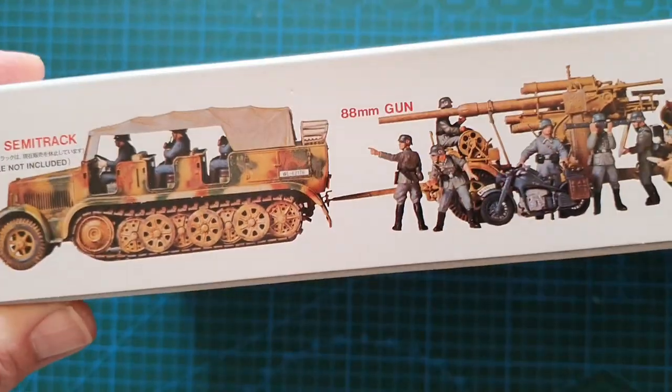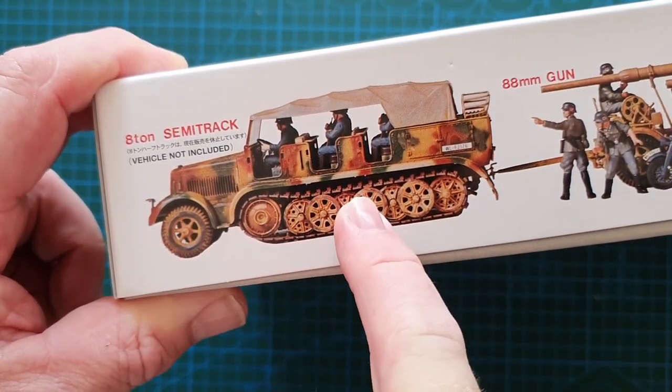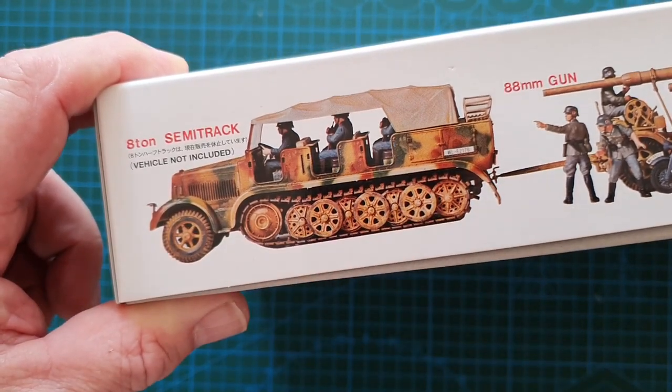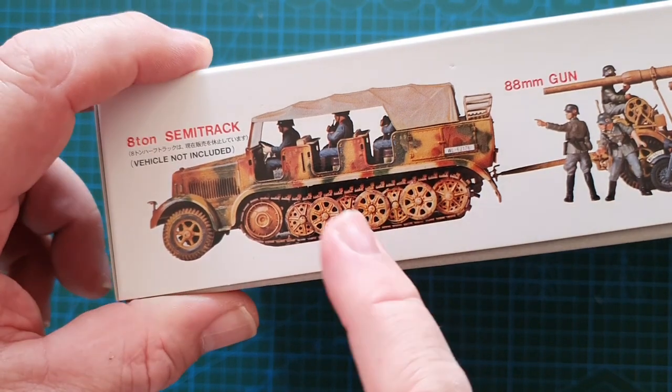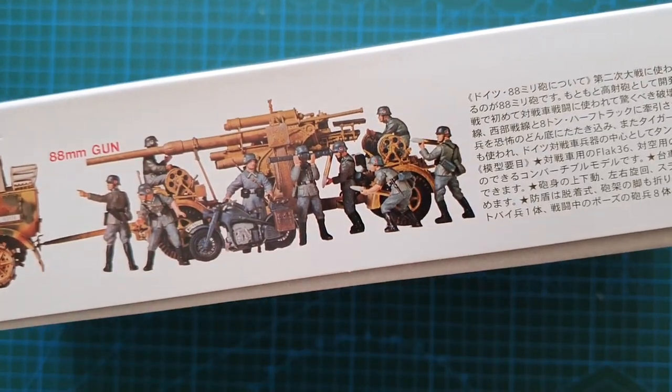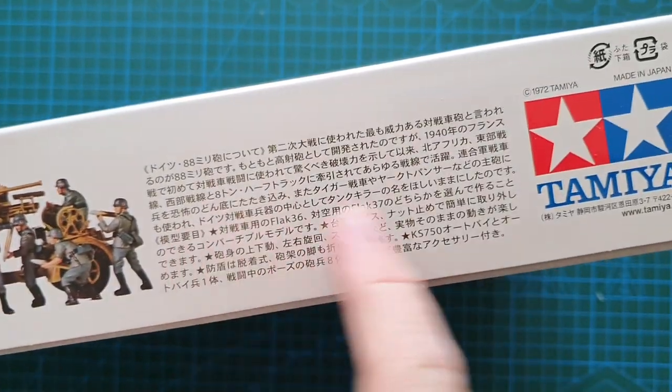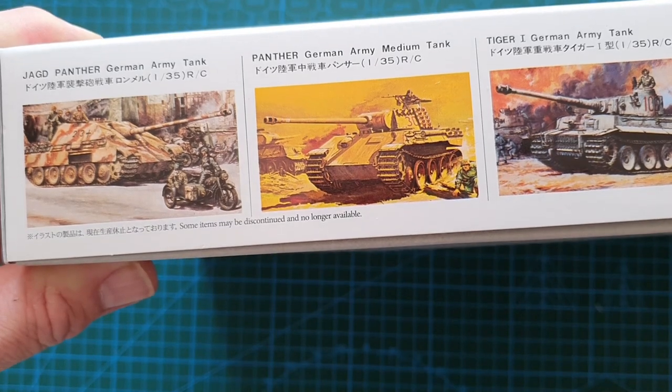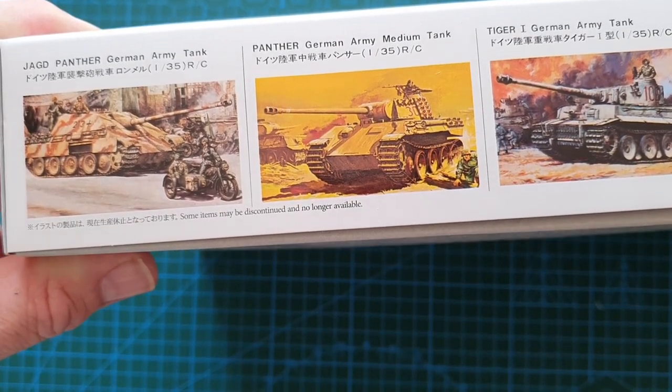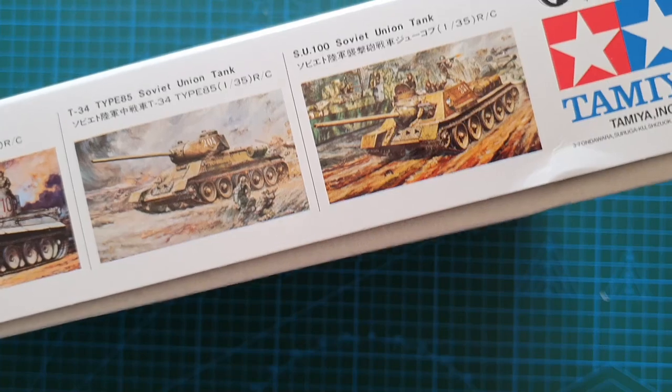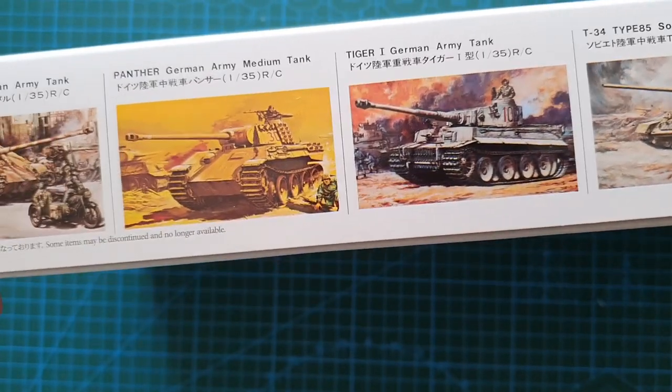On the side, Tamiya's 8-ton half-track vehicle not included, just in case you were hoping to get one of those. I did build at least two of these back in the 70s. The 88 in towing configuration with the crew. History of the 88 in Japanese. On the other side is a range of Tamiya's classic tank kits from the 70s-80s: Jagdpanther, Panther, Tiger I, Sd.Kfz 234, and SU-100, all of which I built back in the 70s.